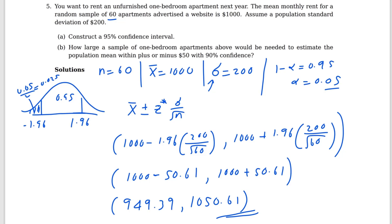The margin of error is 50.61. You should know that type of answer for those types of questions. How do we find the margin of error? The method is the same — only the numbers change. For the next test, this type of problem will most likely appear.